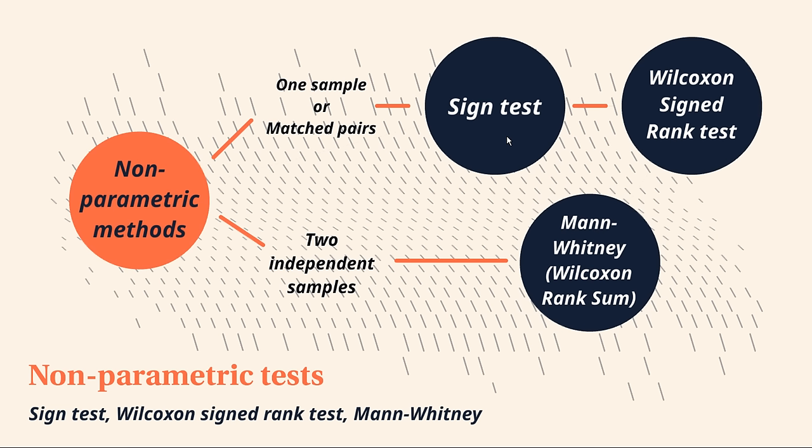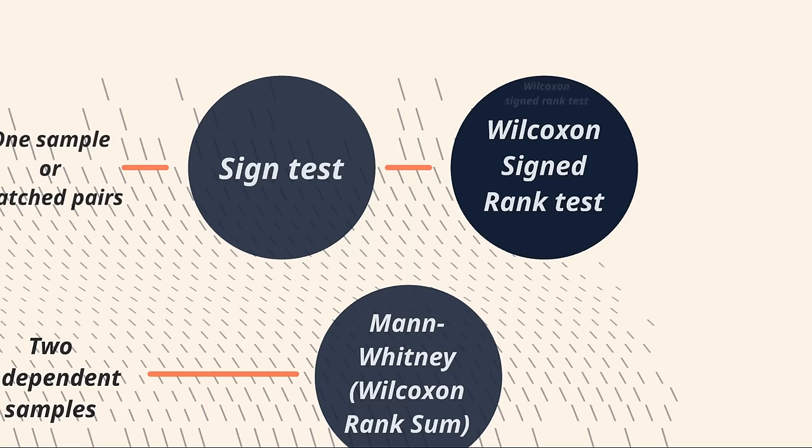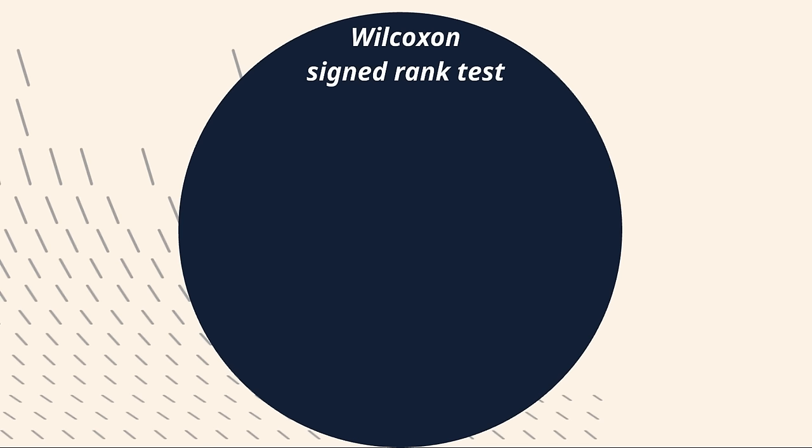So you'll notice that the only piece of information we were using there was whether each particular observation was positive or negative. In other words, is it on one side or the other side of this median value? So it's their sign that we were interested in. What we're about to do is incorporate an extra piece of information in the Wilcoxon signed rank test. And just from the name, you might be able to predict what piece of information that is. But let's find out.